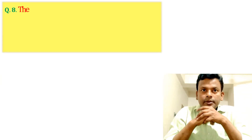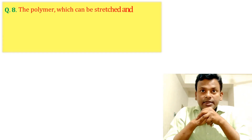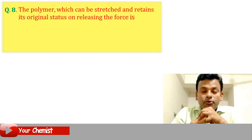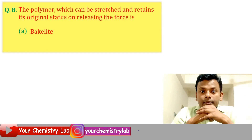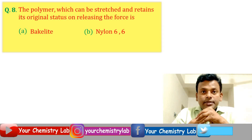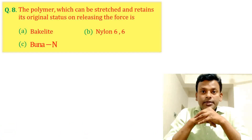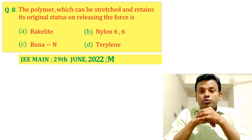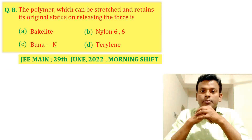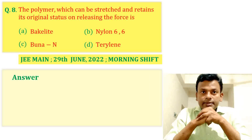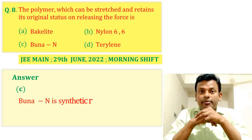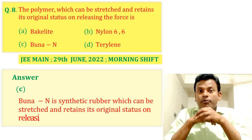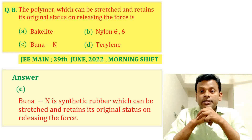Question 8: The polymer which can be stretched and retains its original status on releasing the force is — Options A, B, C, and D. This question was set in JEE Main 29th June 2022 morning shift. Answer: Option C is correct. Buna N is a synthetic rubber which can be stretched and retains its original status on releasing the force. So Option C is correct.